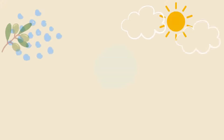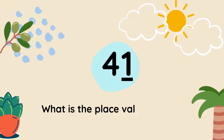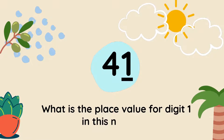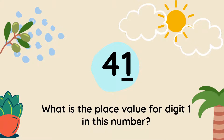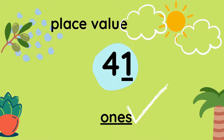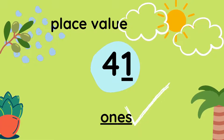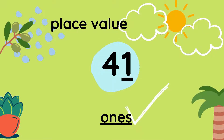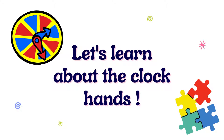Now let's move to the next question. What is the place value for digit 1 in this number? Look carefully and try to recall. Let's check the answer. The place value for digit 1 in 41 is 1s — ones. Well done if you got the answer correct for all the questions.